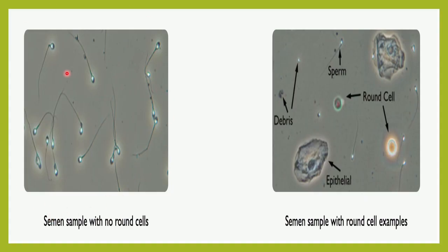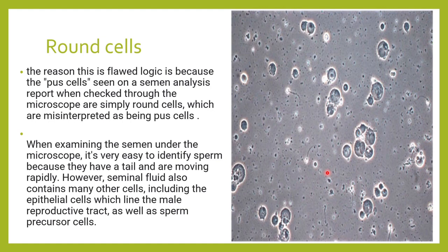This is a semen sample wherein you can see that there are no round cells other than the spermatozoa — we cannot see anything else here. But in this smear you can see that there are spermatocytes and also certain round cells, certain debris, and certain epithelial cells. These cells which appear other than the spermatocytes are usually called round cells.